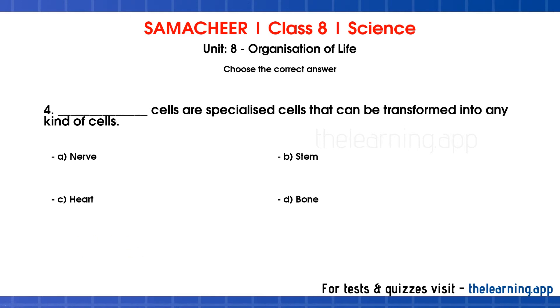Fourth question: Dash cells are specialized cells that can be transformed into any kind of cells. The options are A. Nerve, B. Stem, C. Heart, D. Bone. The correct answer is option B, stem cells.